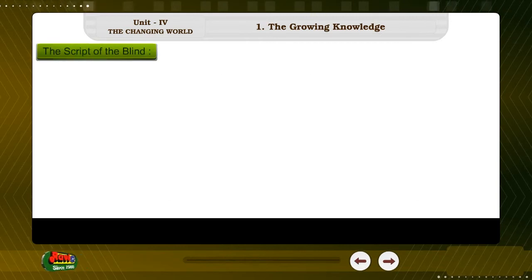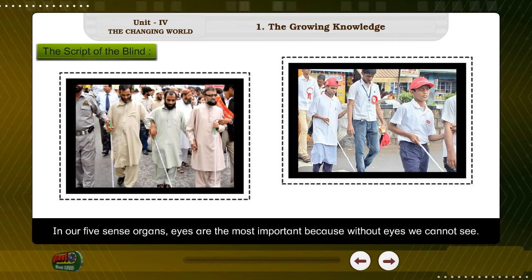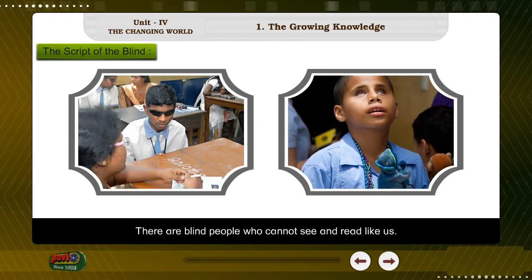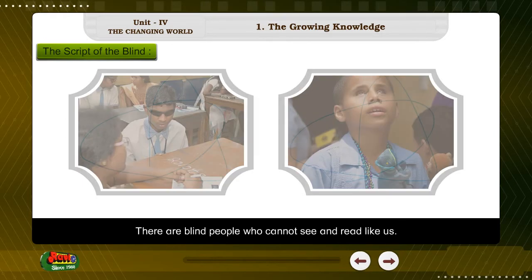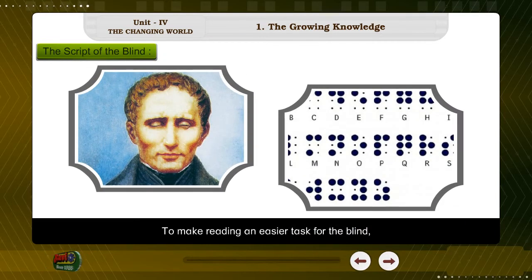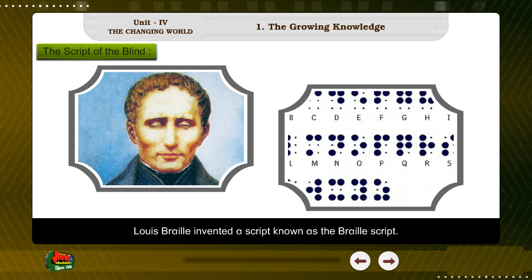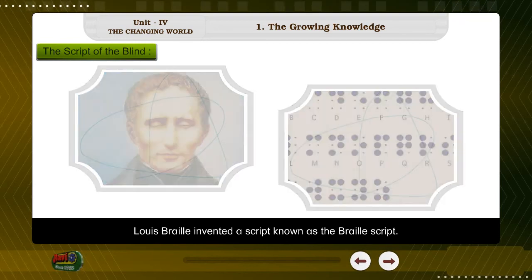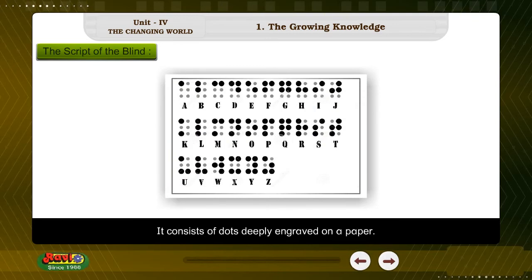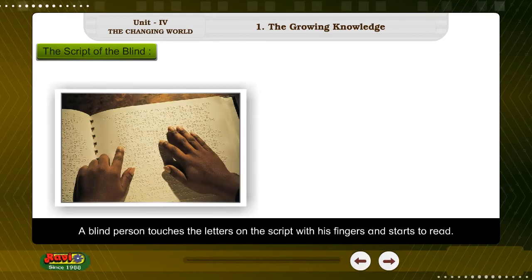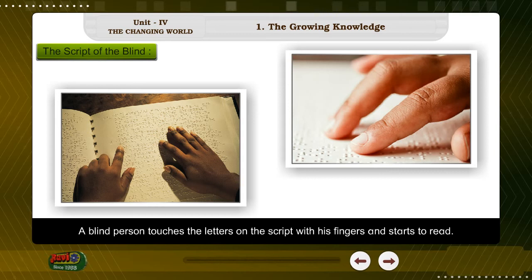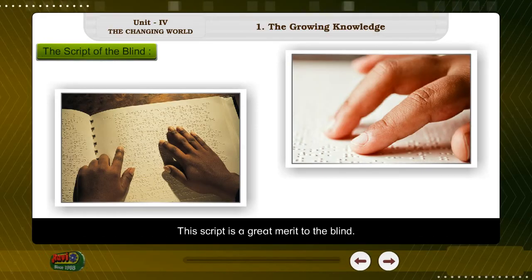Among our five sense organs, eyes are the most important because without eyes we cannot see. There are blind people who cannot see and read like us. To make reading an easier task for the blind, Louis Braille invented a script known as the Braille Script. It consists of dots deeply engraved on paper. A blind person touches the letters on the script with his fingers and reads. This script is a great benefit to the blind.